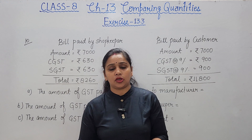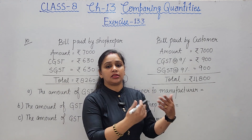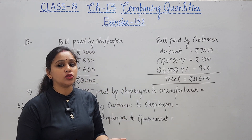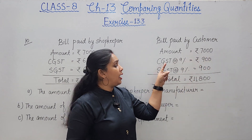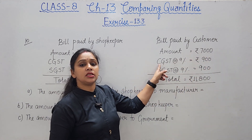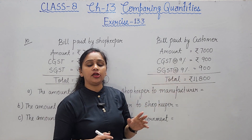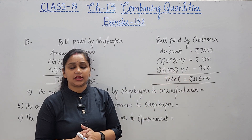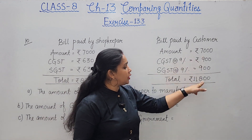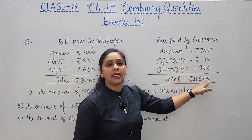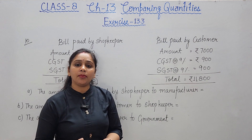The shopkeeper kept the selling price at 7000 rupees but now applies 9% CGST and 9% SGST (total 18% GST) when selling to the customer. So the customer pays rupees 11,800 to the shopkeeper.